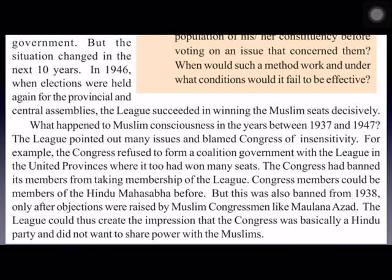What made the difference in these ten years? In 1937 the League could not win, but in 1946 it won most seats. The League had pointed out many issues and blamed Congress. When the League wanted to form a coalition government with Congress in United Provinces, it was refused. Congress also banned its members from joining the Muslim League. Over these ten years, the League created the impression that Congress was basically a Hindu party and did not want to share power with Muslims.